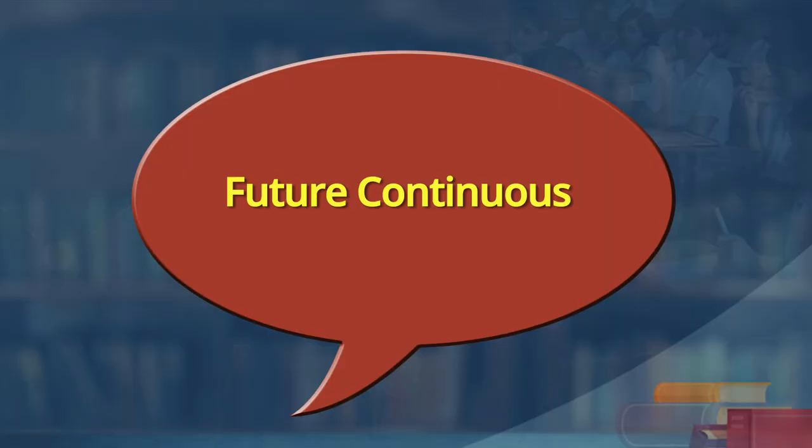We have now somehow learnt future simple. Let us move on to future continuous tense. Now we are clear on when to use simple future tense — when there is a prediction, an action for the future, a compulsion in the future, or any future action. Simple future tense. Now let us discuss and learn future continuous. An action which takes place in the future is referred to as future tense. And future continuous? An action which will continue in the future.